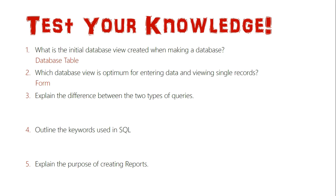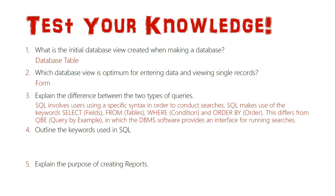Question three: explain the difference between the two types of queries — SQL and QBE. SQL uses specific syntax and keywords: SELECT represents the fields, FROM represents the tables being used in the search, WHERE is the condition the search is based on (for example, all surnames starting with A), and ORDER BY sorts results in ascending or descending order. QBE, or Query by Example, provides an interface through the DBMS for running searches in an automated way — you just type in search criteria and the DBMS performs the search itself, without entering any code.